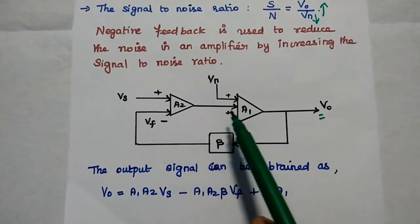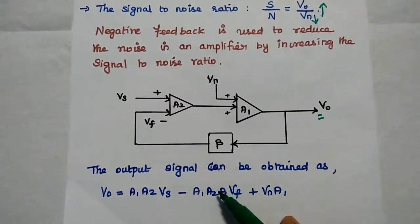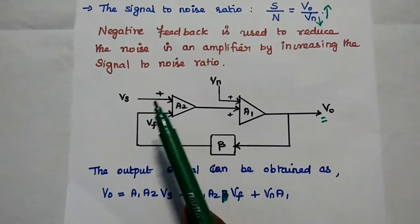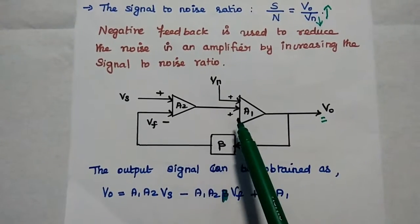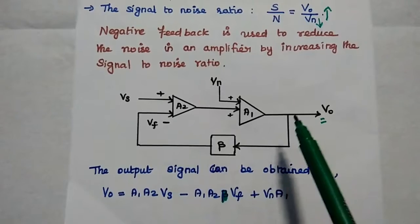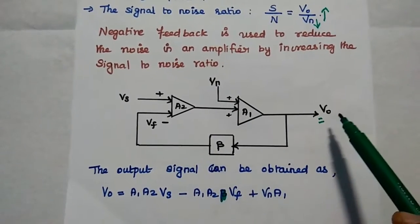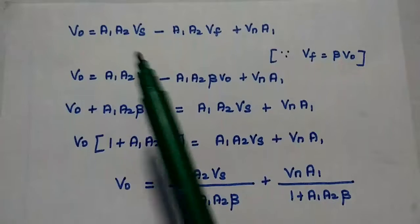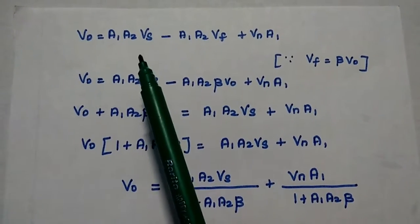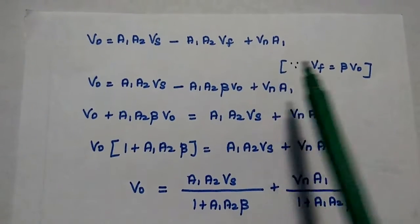Since negative feedback means minus, Vf is also multiplied with A1 and A2. So V0 equals A1·A2·Vs minus A1·A2·Vf plus Vn·A1.